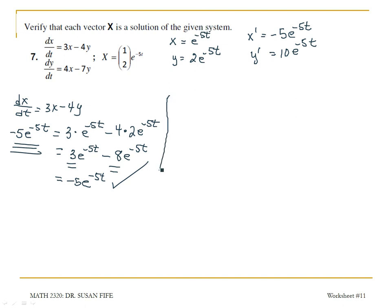Checking my second equation, dy/dt equals 4x minus 7y. dy/dt is 10e to the negative 5t, which should equal 4 times x, or 4e to the negative 5t,